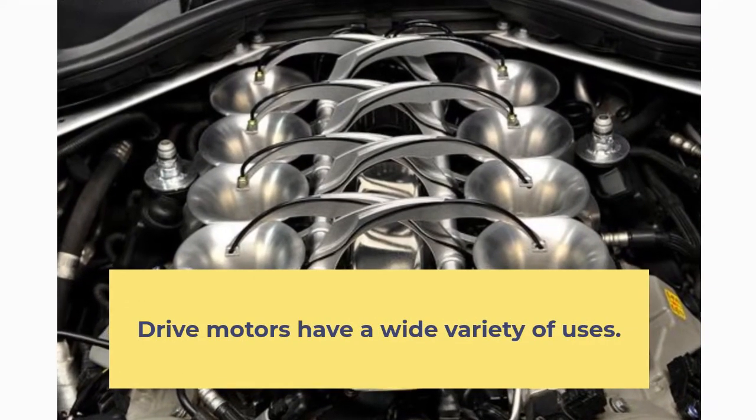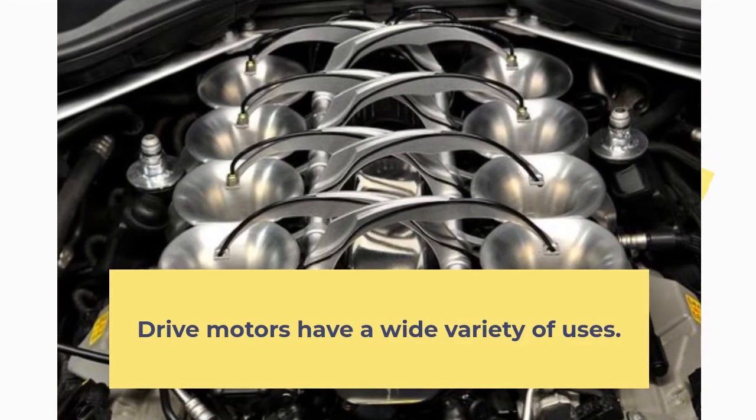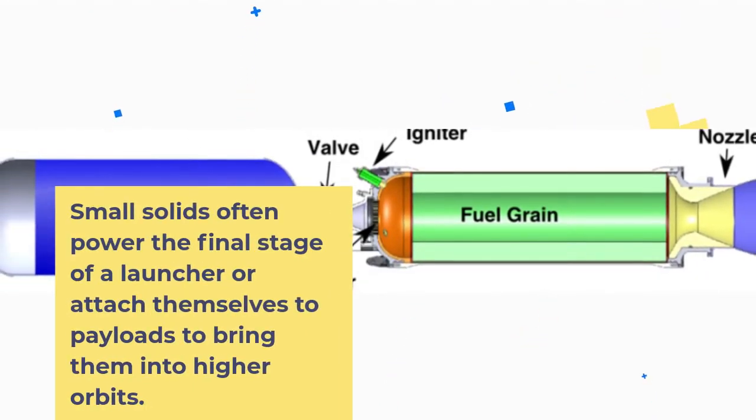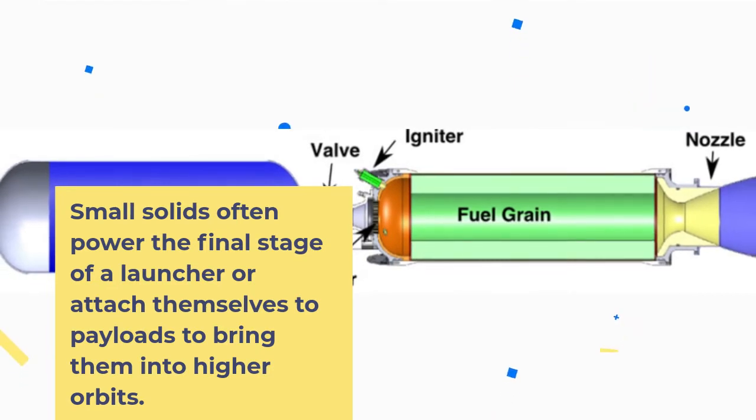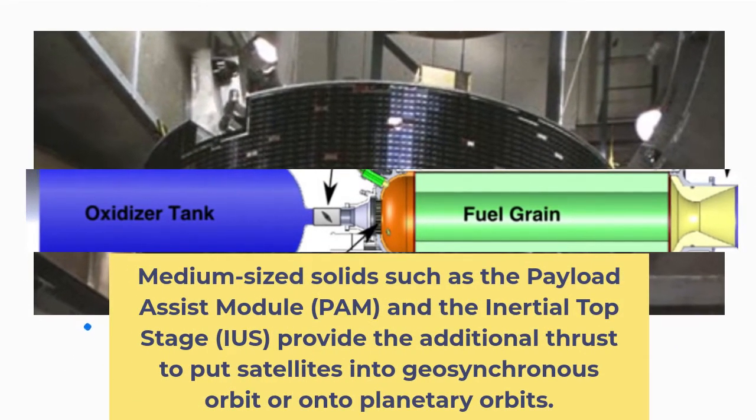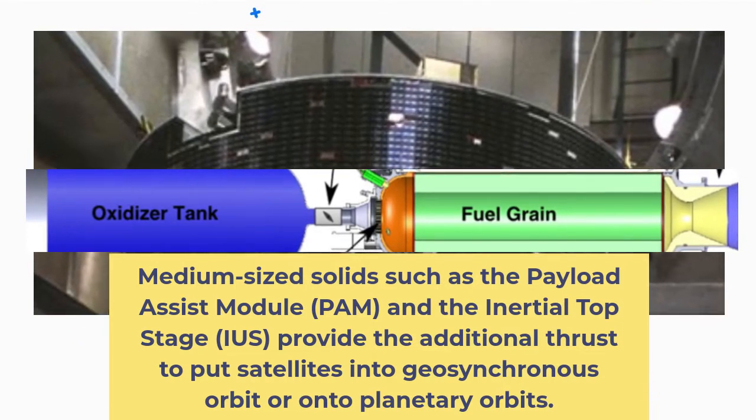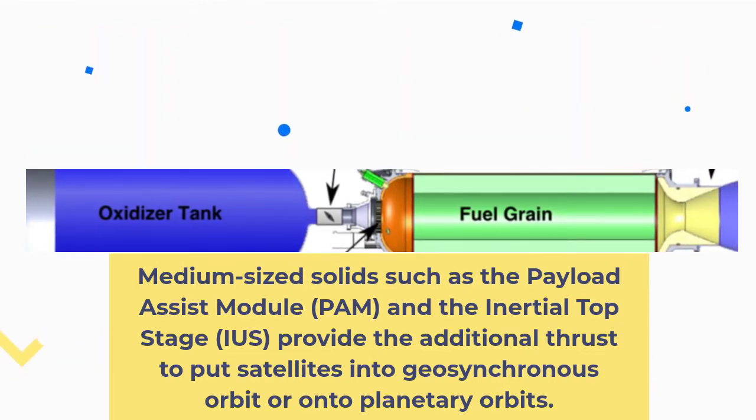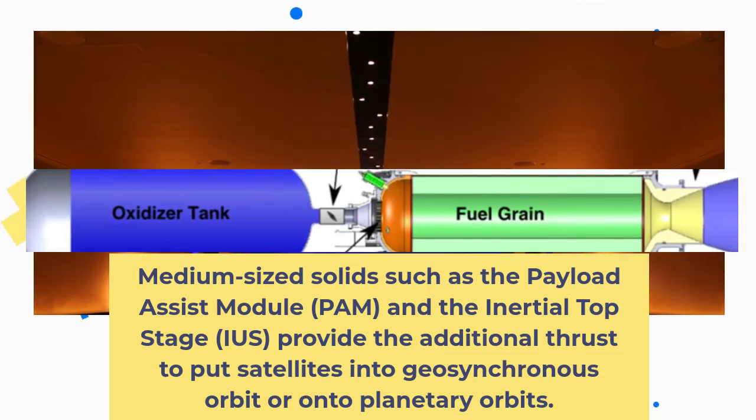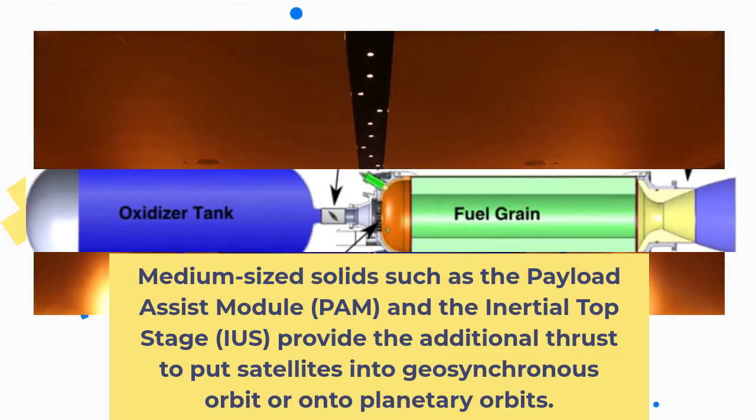Solid drive motors have a wide variety of uses. Small solids often power the final stage of the launcher or attach themselves to payloads to bring them into higher orbits. Medium-sized solids, such as the Payload Assist Module (PAM) and the Inertial Upper Stage (IUS), provide the additional thrust to put satellites into geosynchronous orbit around planetary orbits.